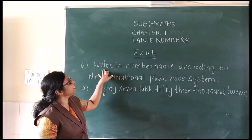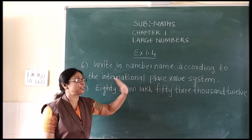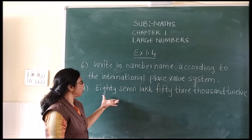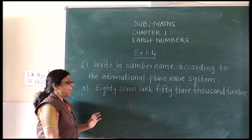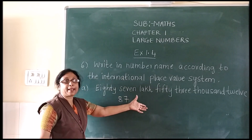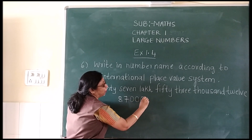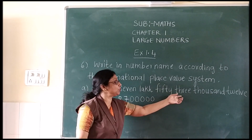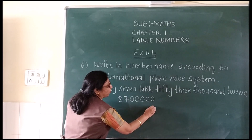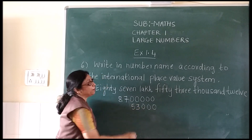We will see question number 6: write the number according to the international place value system. Your first sum is 87 lakh. So how you are going to write 87? 87, then lakh — lakh has 5 zeros, so you place 5 zeros here: 1, 2, 3, 4, 5. Then we have 53,000 — in 1000 how many zeros? 3. So we will write 3 and 53. Then 12.